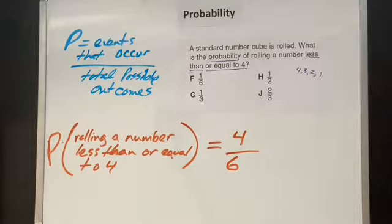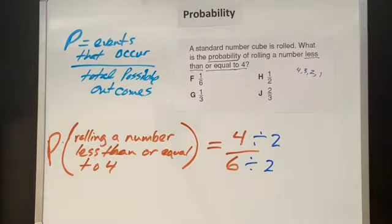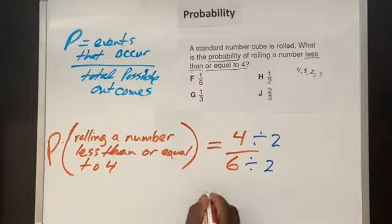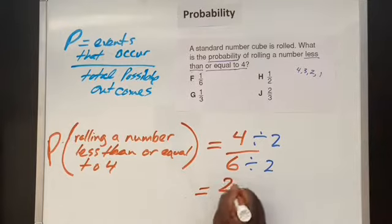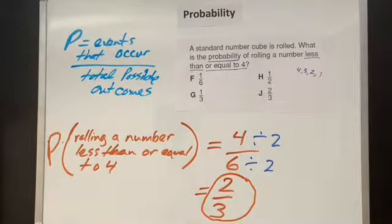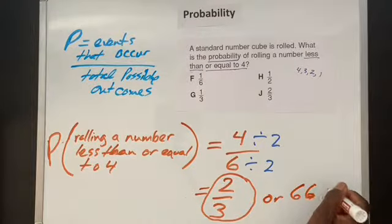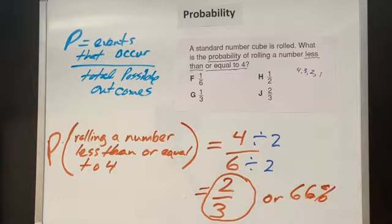So there's four numbers that can be rolled out of total possible outcome six: numbers one, two, three, four, five, six on a number cube. Now, sometimes you may have to reduce the fraction, and we can go ahead and do that. If we divide both the numerator and denominator by two, then we're going to get a final answer, the probability that is equal to two over three. So what that means is the probability of rolling a number less than or equal to four is two over three, or we can say or 66%.